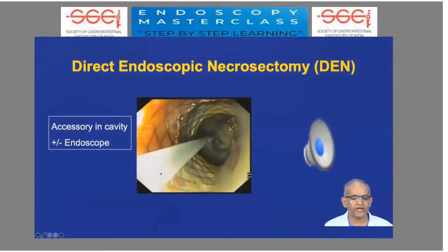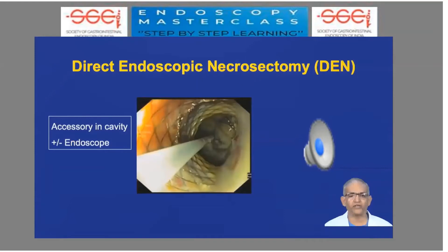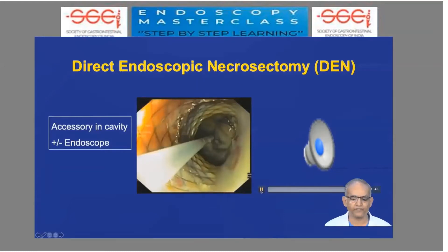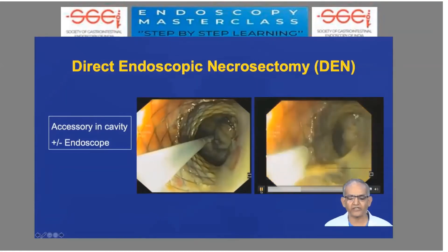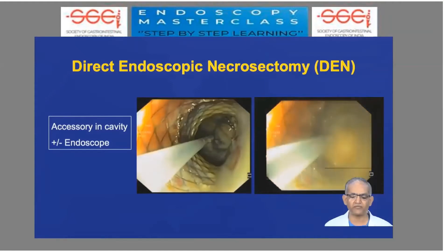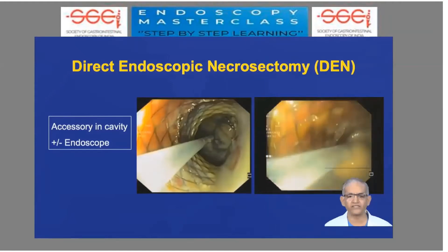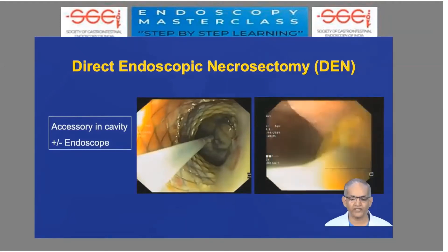For direct endoscopic necrosectomy, the accessory is passed inside the cavity with or without the scope — either the accessory goes in alone, or the scope with the accessory goes inside the cavity. As seen here in this panel, you can see pus coming out and debris inside, but the scope is still outside or just at the mouth of the stent. By visualizing the debris, we can still pull it out.